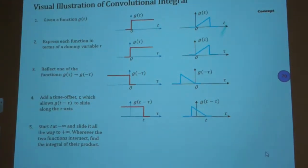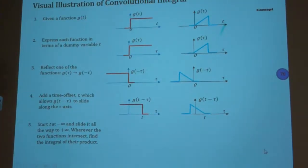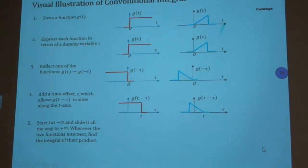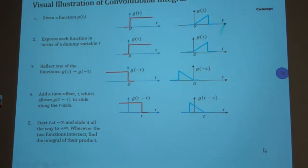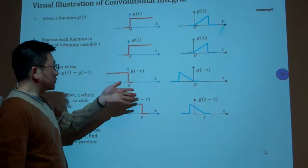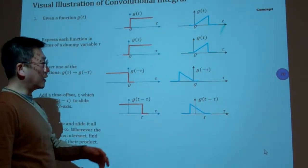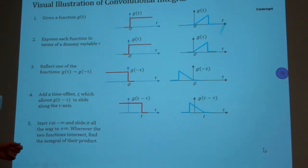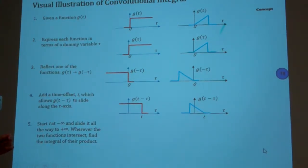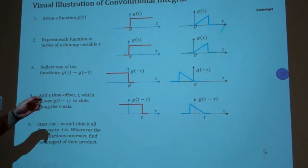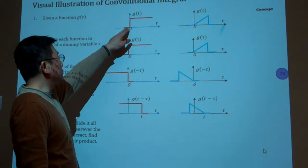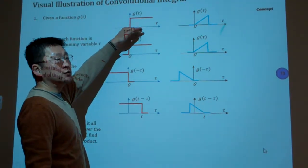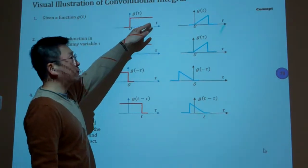So here is the visual illustrations of how the convolutional integral can be done. And here I demonstrate using two different types of functions. For example, if we have a function as the step input, so this is called a step function.